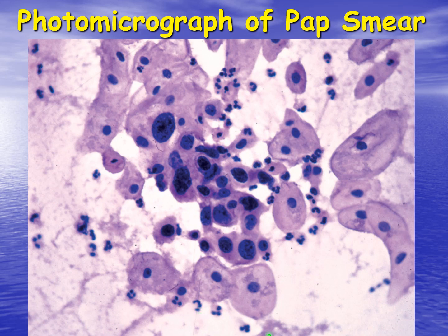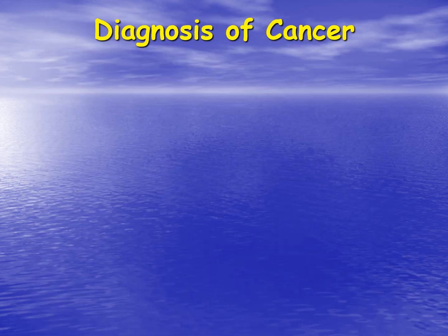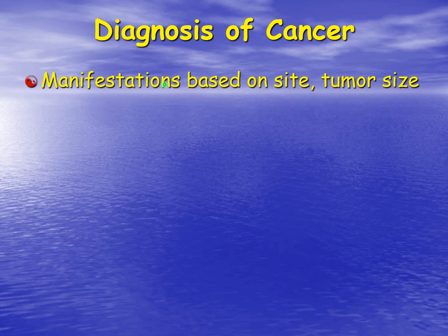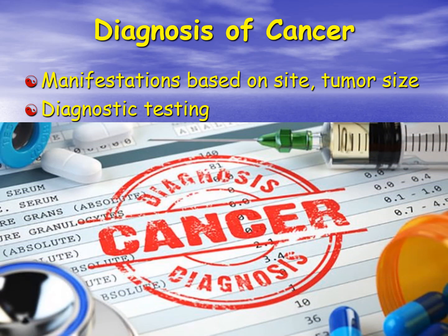This is a photomicrograph of a Pap smear. These are the normal epithelial cells of the cervix, and these are cancerous cells. You can look at these cells and see that they're different shapes, the nuclei are different shapes — this is actually cervical cancer. We can diagnose cancer based upon the manifestations, the site of where the cancer is, and the tumor size, along with our diagnostic testing.